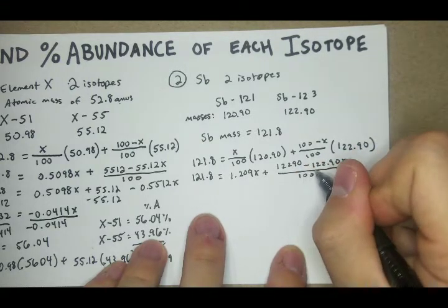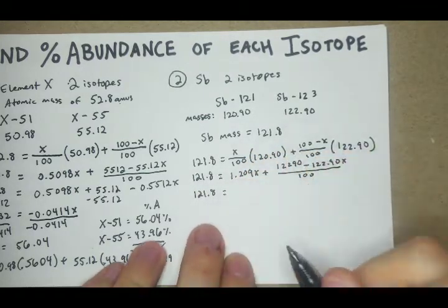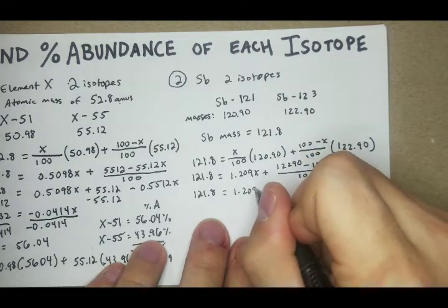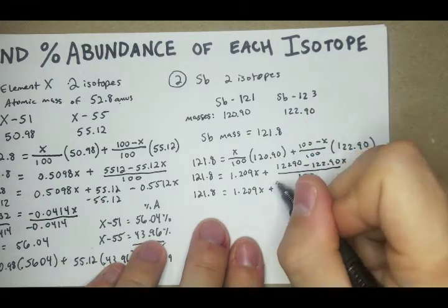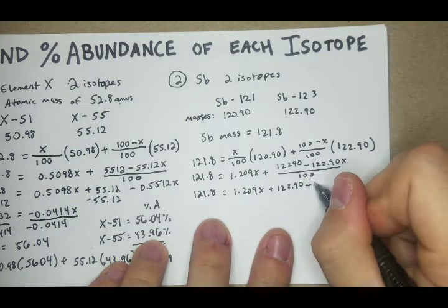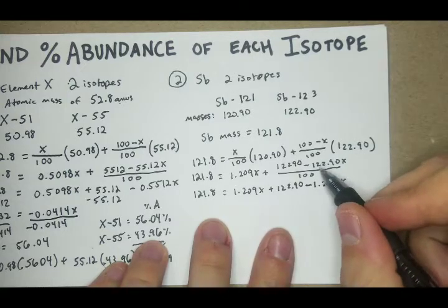We'll do the 120.90 plus 100 minus X over 100 times 122.90.